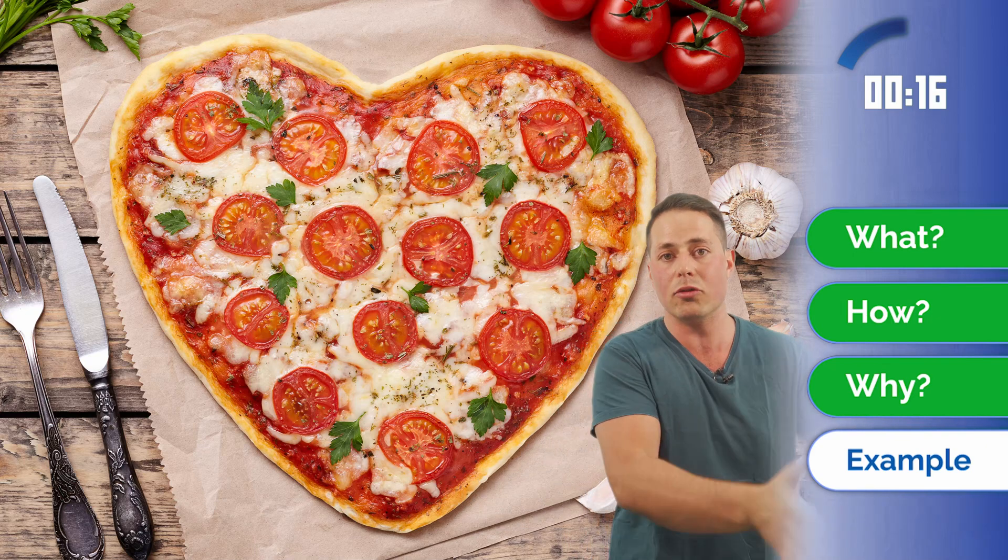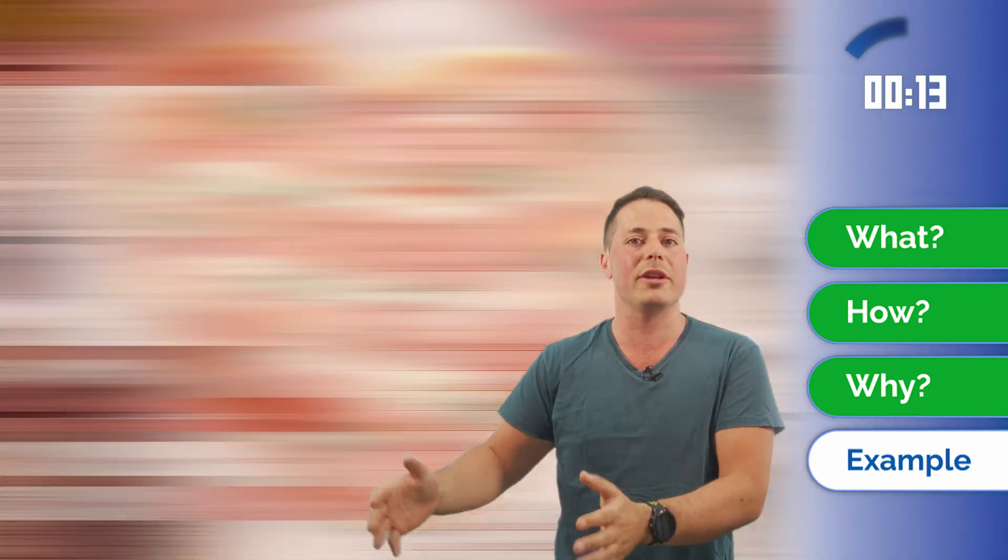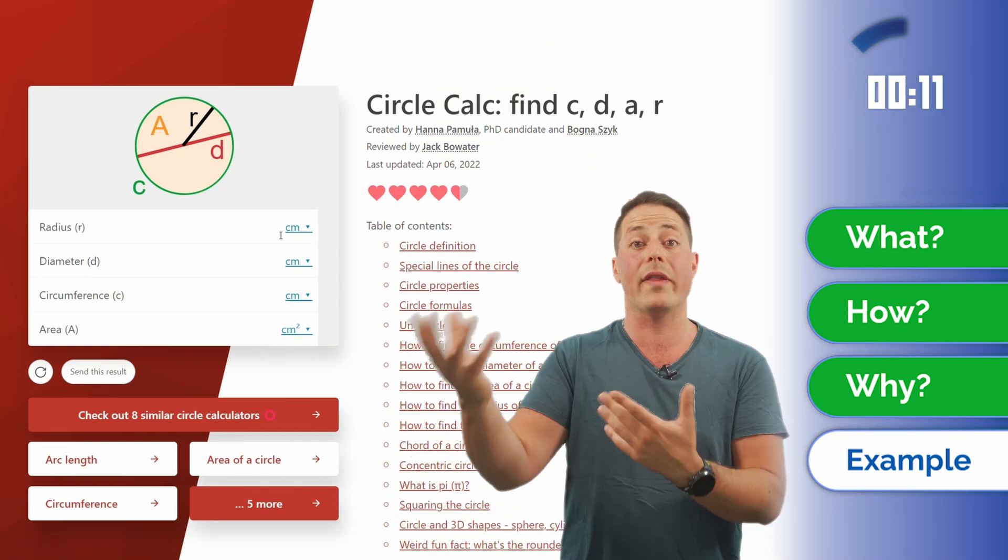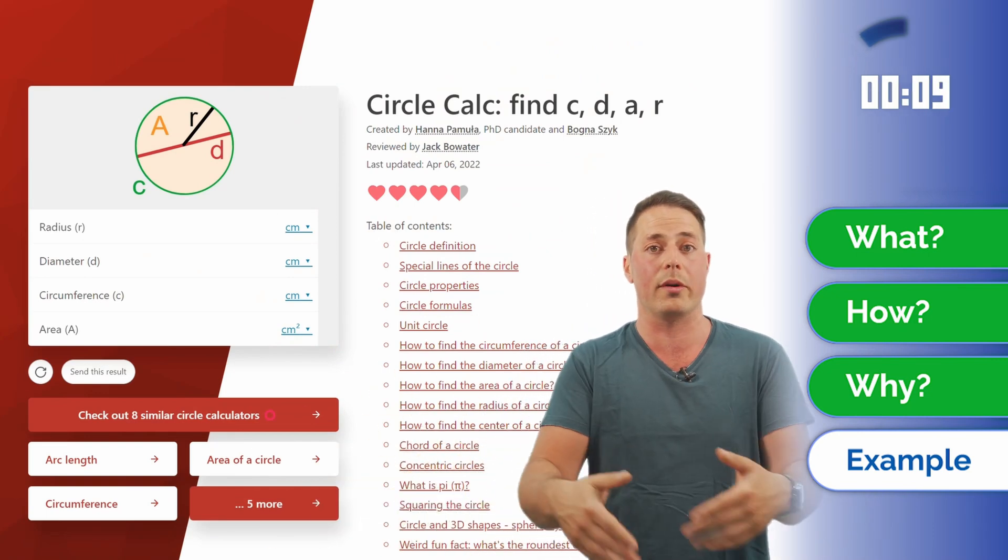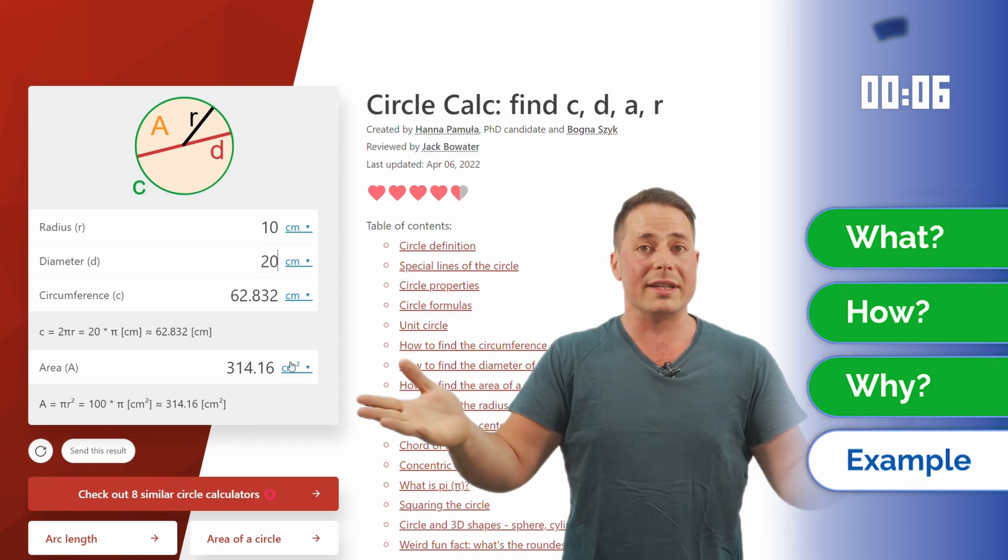It can come in diameters of 20 centimeters, 30 centimeters, and let's say the 30 centimeter is 50 percent more expensive. You might say, oh, that makes sense. 30 is 50 percent more than 20. So it makes sense. They are the same price.